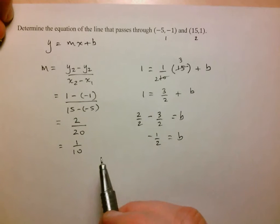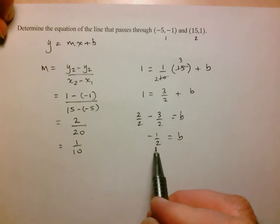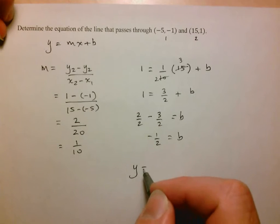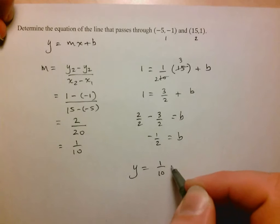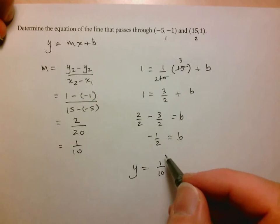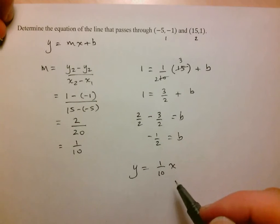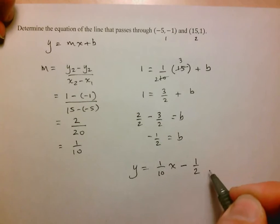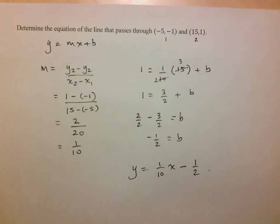And so now that I have my slope and my y-intercept, I can write the final answer, which is the equation: y equals 1 over 10 x plus negative 1 half. But we should be able to deal with that quickly, so I'm just going to write that straight off as minus 1 half. And there's my equation.